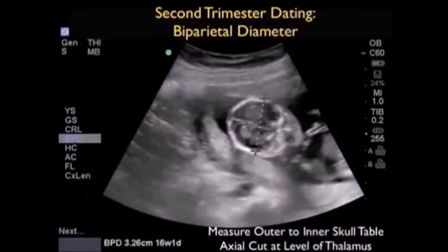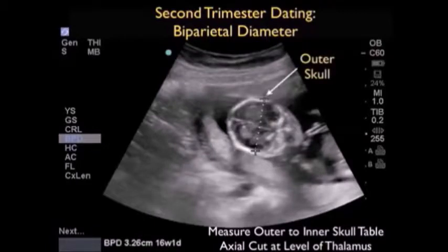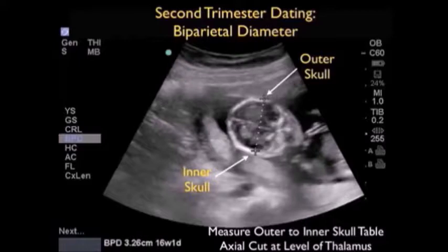In the second trimester, dating of gestational age focuses on skull circumference or measurement of the biparietal diameter. We want to measure the skull at about the level of the thalamus in an axial orientation with the face down. As we can see here, we're placing the calipers from the outer skull table proximally to the inner skull table distally, and we have a measurement of 3.26 centimeters correlating to a 16-week, one-day gestational age.